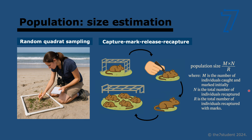For motile organisms — the ones that do move — you can use the capture-mark-release-recapture method. You capture as many individuals as you can in the area, mark them with tags such as paint, and then release them. You then recapture some and count how many are marked, and use the Lincoln index to calculate the population size.